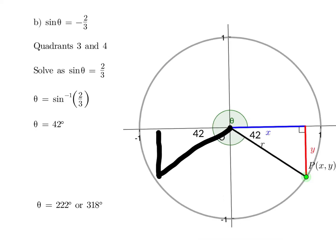For the second example, we have sine theta equals negative two-thirds. Once again, where is sine negative? That's in quadrants 3 and 4. Solve it as a positive, so we solve sine theta equals positive two-thirds. We do shift sine of two-thirds, that gets us 42 degrees. Note we've got an acute angle again.